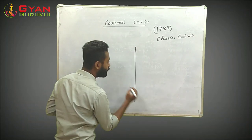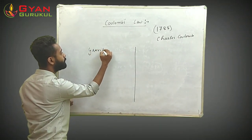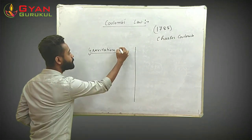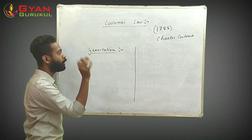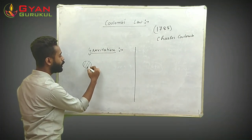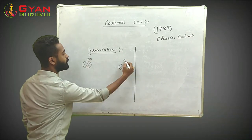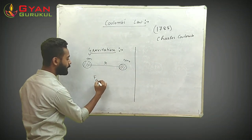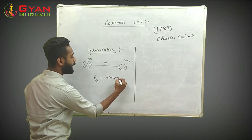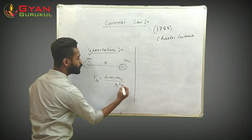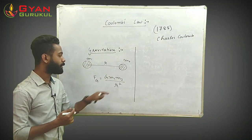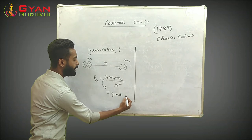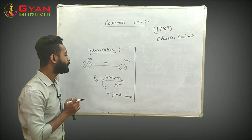The law of gravitation, covered in class 11, states that when two bodies of masses M1 and M2 are separated by a center-to-center distance R, the gravitational force between them is given by F = G·M1·M2 / R². Here M1 and M2 are the masses, R is the distance, and G is the universal gravitational constant.